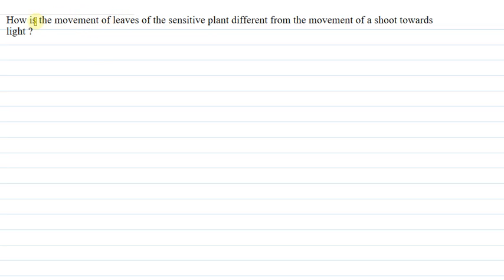Hello everyone, I am the teacher for this question. Let me explain the question to you now. The question says: how is the movement of leaves of the sensitive plant different from the movement of the shoot towards light?